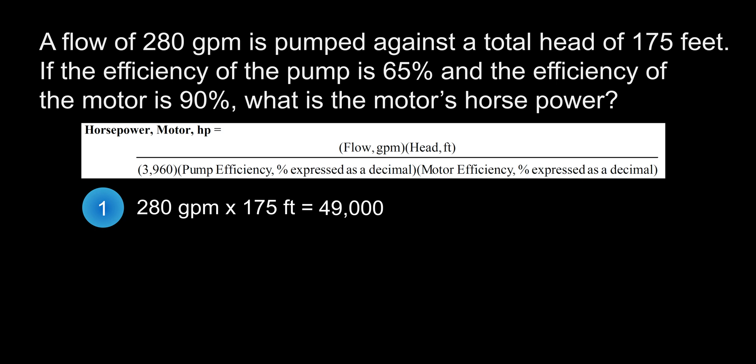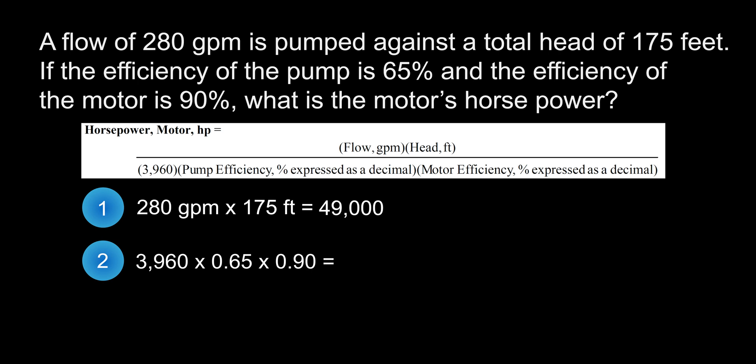Next, we will solve for the bottom half of the formula. We do this by taking 3,960 — which is a constant that is necessary for the conversion to horsepower — and multiplying it by the pump efficiency of 65%. Converting 65% to a decimal gives 0.65. We then multiply that by the motor efficiency of 90%, converted to a decimal, which is 0.90. This gives us an answer of 2,316.